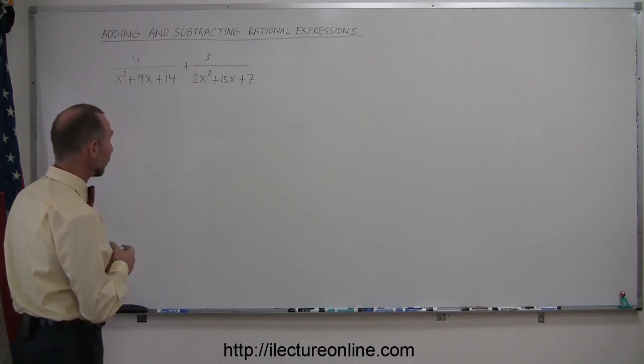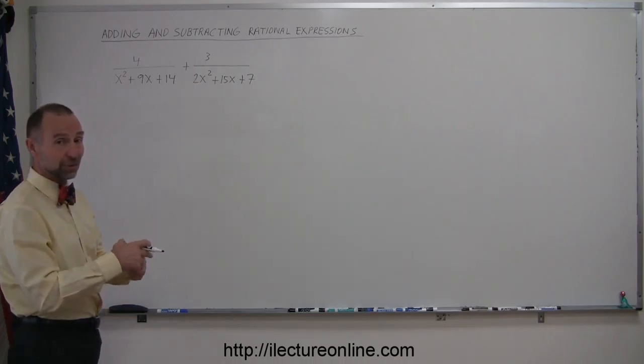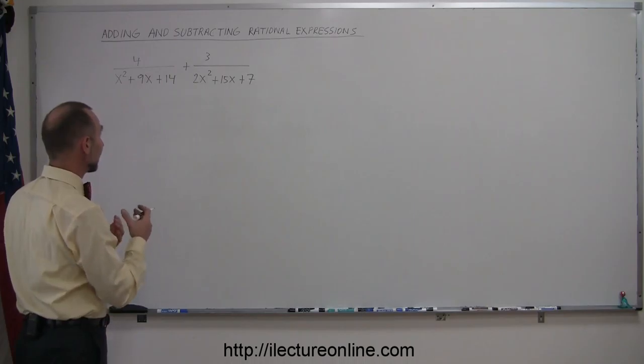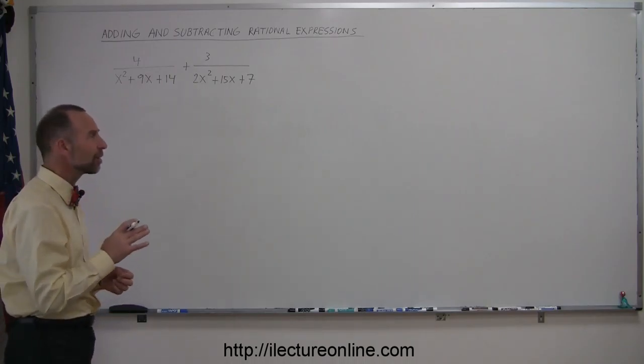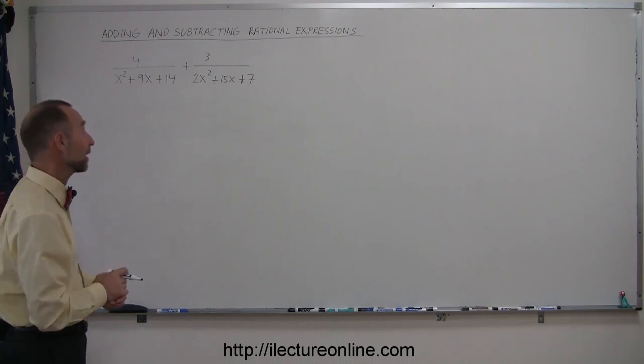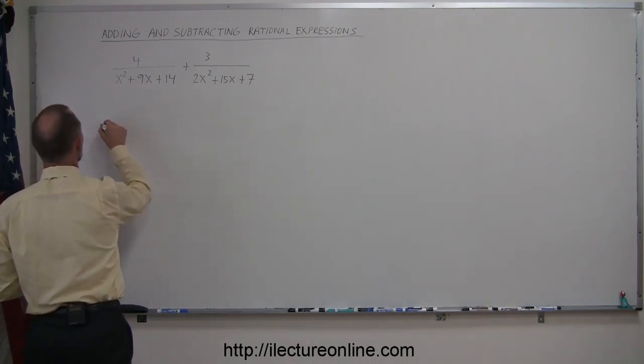Now, if they're not factorable, the only way we'd get a common denominator, which is the way you want to add these, by getting the common denominator, you have to multiply these out. So, I'm thinking that these can probably be factored. So, let's try that. Let's factor the two denominators first.